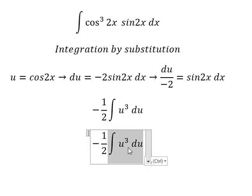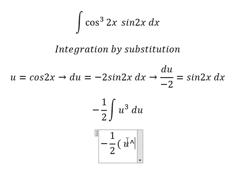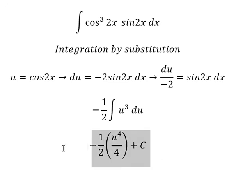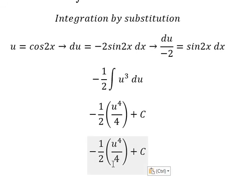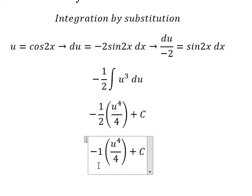The integration of this one, we have u to the power of 4 over 4, and we plus C. Negative 2 and 4, we have 1 over 8.